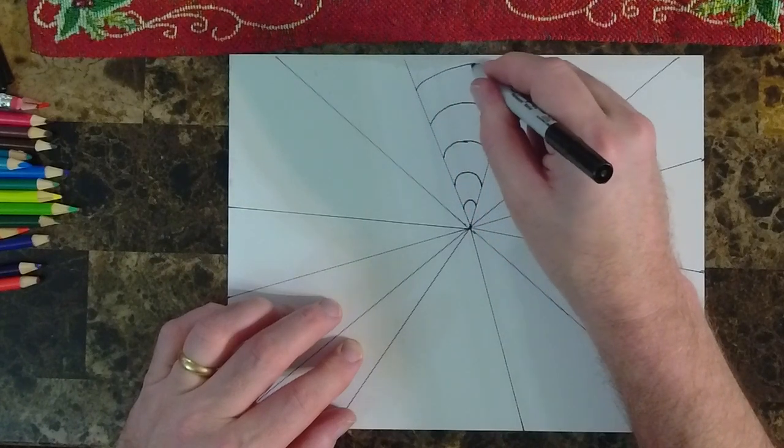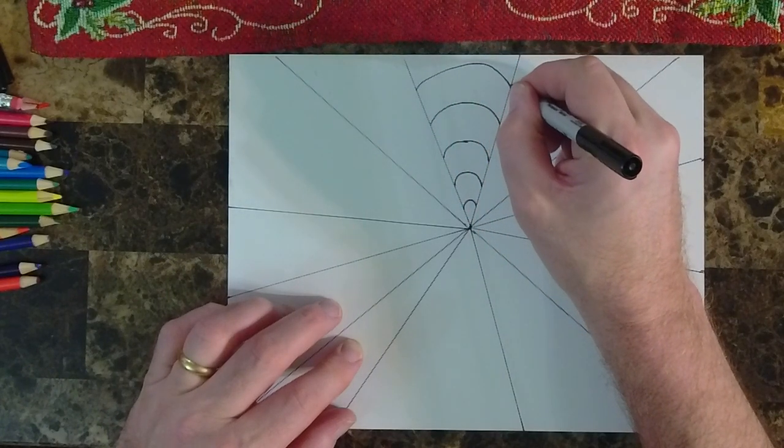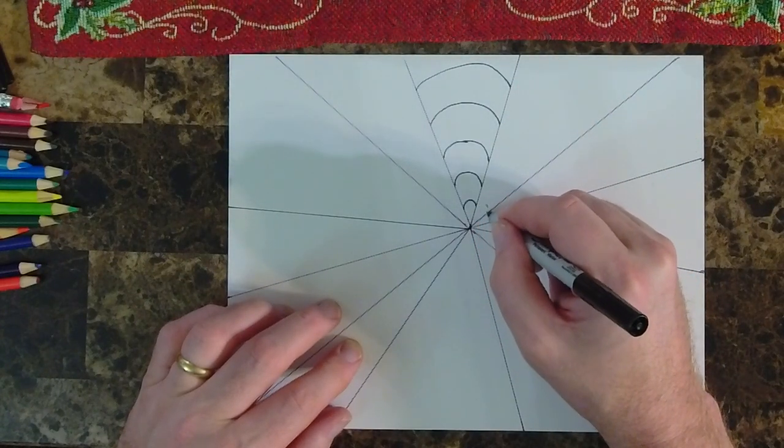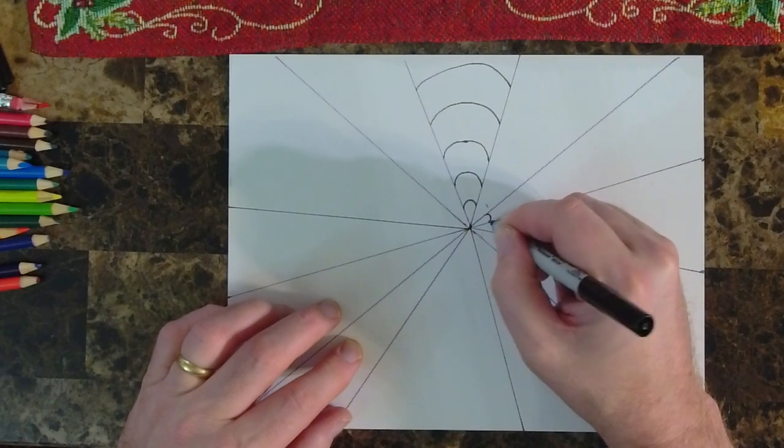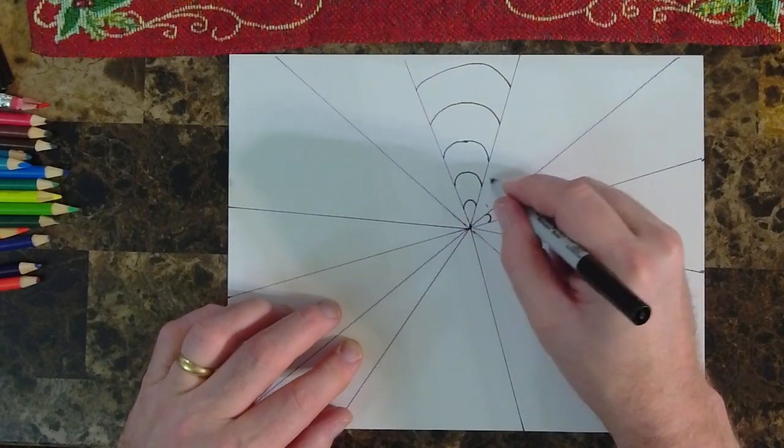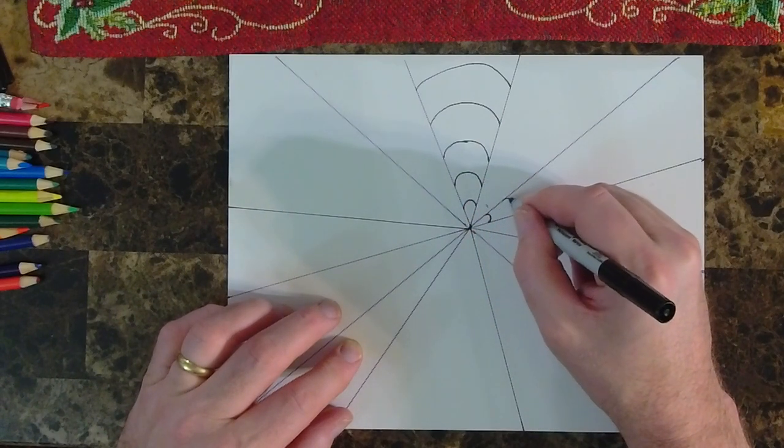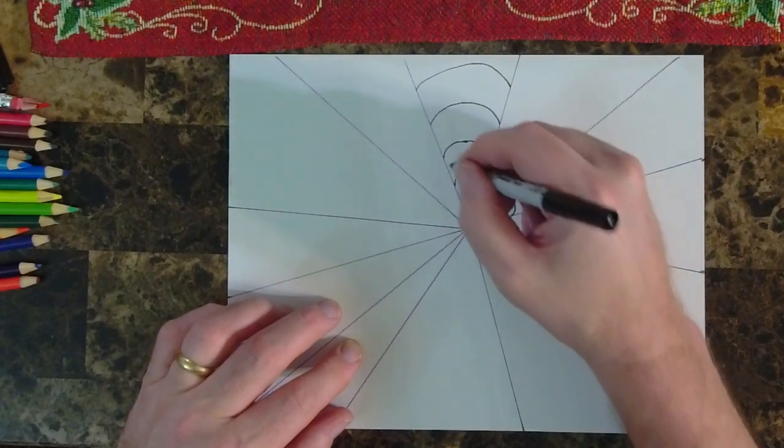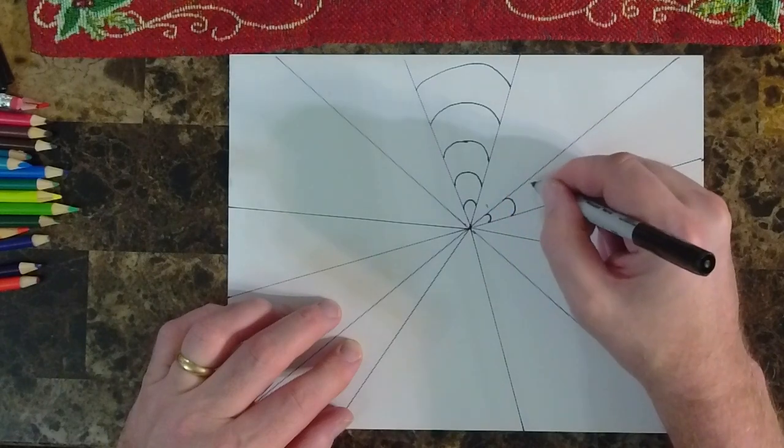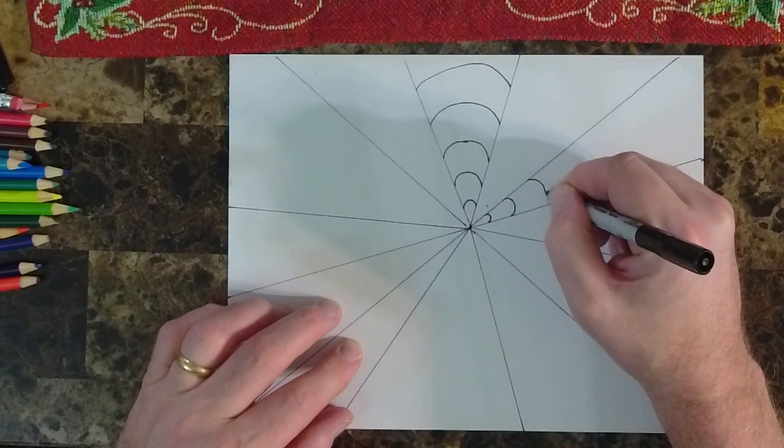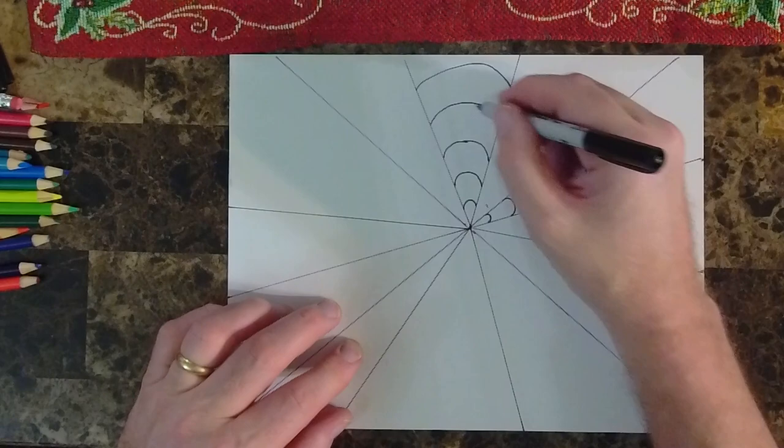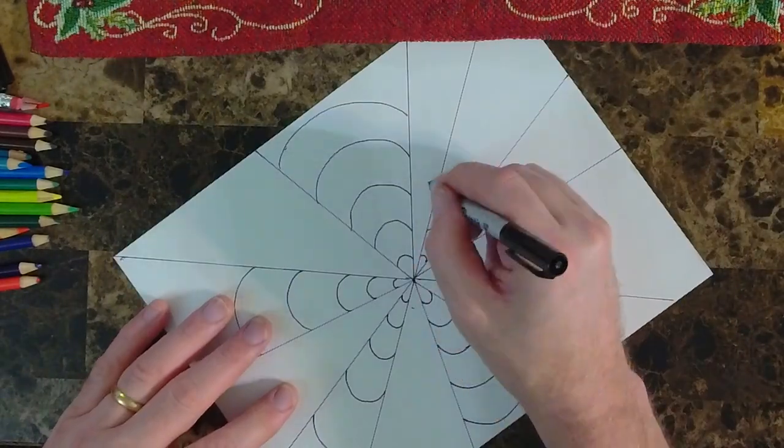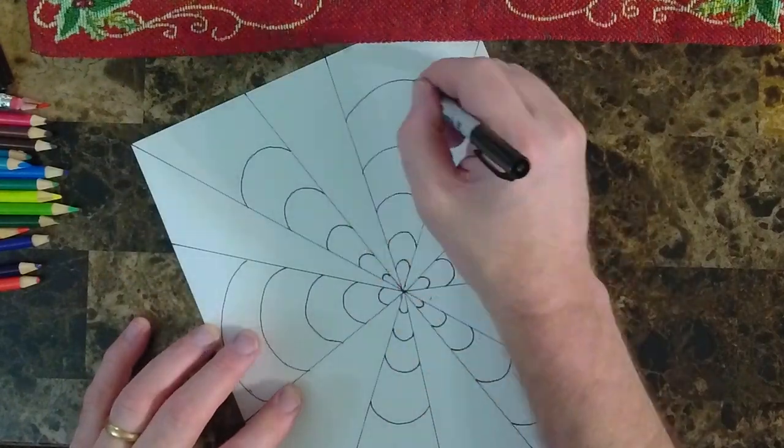And then we're going to do is we're going to skip one of these lines and then put another one just like that. Skip, jump, and then start right there and make another curved line. And then we're going to keep doing that. Skip this triangle, go right there, so kind of playing leapfrog with those. And then we're going to do the same with all these. You can move your paper. It makes it so much easier. Feel free to move your paper while you're doing that.